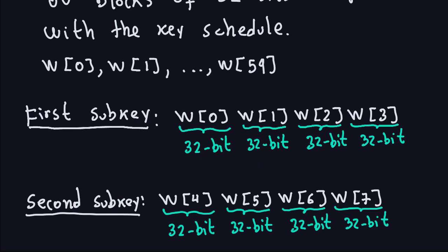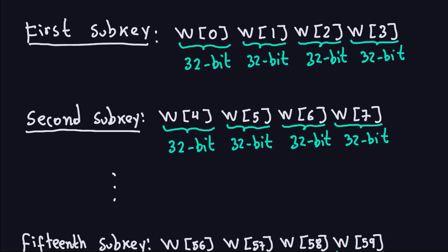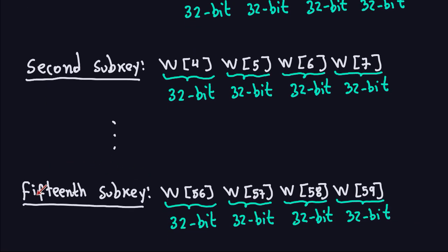The last subkey, which is the 15th subkey, will be the last four 32-bit blocks: w56, w57, w58, and w59. That is how you produce all the subkeys. The key schedule for 192 and 256 produces the w's, and then you take four w's at a time — four blocks of 32-bit — and that gives you each subkey. In this case we have 15 subkeys.